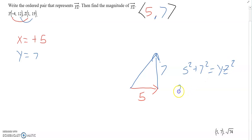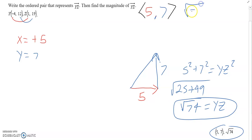25, 49, so 74. And that does not simplify. So when you take the square root of YZ, you get YZ equals square root of 74. Oh, that one was already down there. So the ordered pair is 5, 7. The magnitude of that vector would be 74.